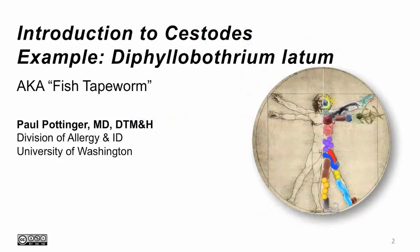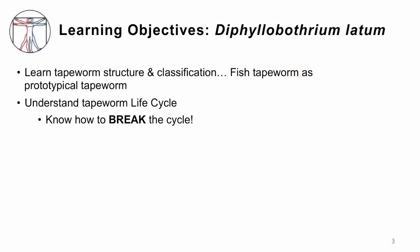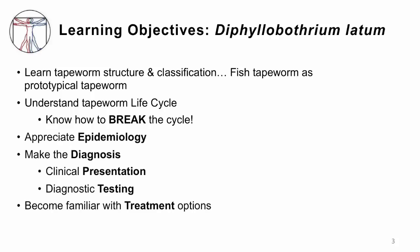This lecture will introduce you to the cestode tapeworms, with the example of Diphyllobothrium latum, also called the fish tapeworm. I'm Dr. Paul Pottinger. I want you to get familiar with the structure and classification of tapeworms. The fish tapeworm is a prototypical one — understand its life cycle so you can break that cycle. Know who gets the infection, be able to make a diagnosis, and become familiar with treatment options.